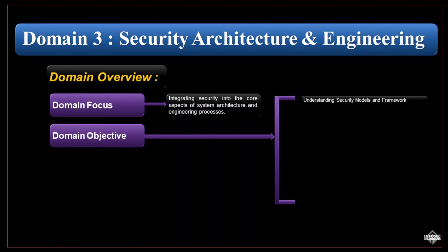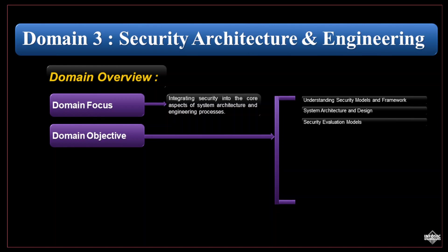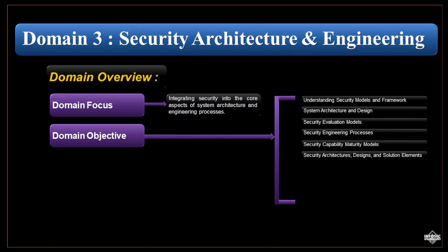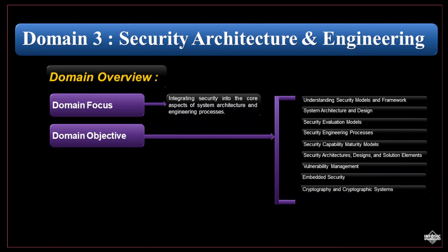The objectives of this domain include: understanding security models and frameworks; system architecture and design; security evaluation models; security engineering processes; security capability maturity models; security architectures, designs, and solution elements; vulnerability management; embedded security; cryptography and cryptographic systems; and site and facility design for security.